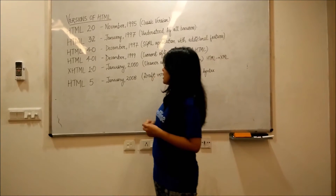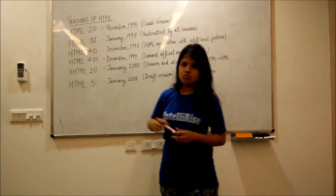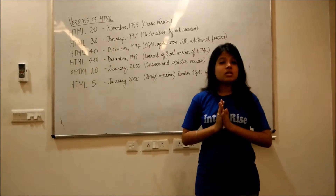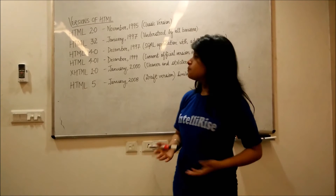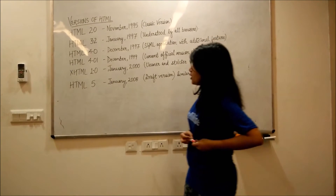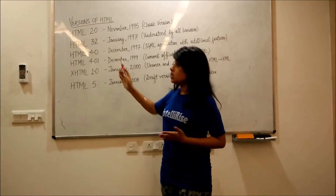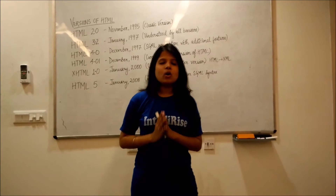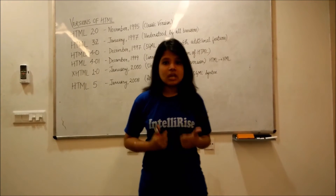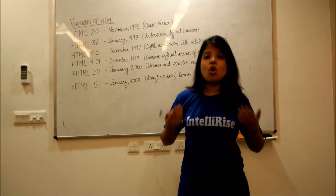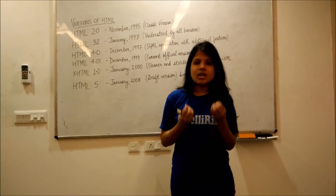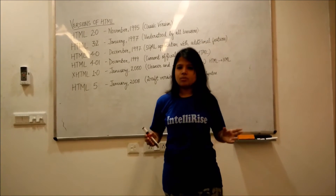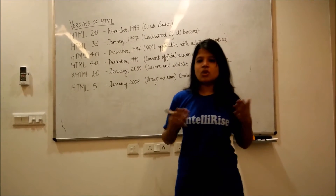So then the next major release was HTML 3.2. Prior to this we had HTML 3.0, but it was never completed and hence never implemented. HTML 3.2 was released in January 1997, which was understood by all the browsers — that was its key point. So it was very easy for all of us to make our HTML pages on this version because it supported all the browsers.